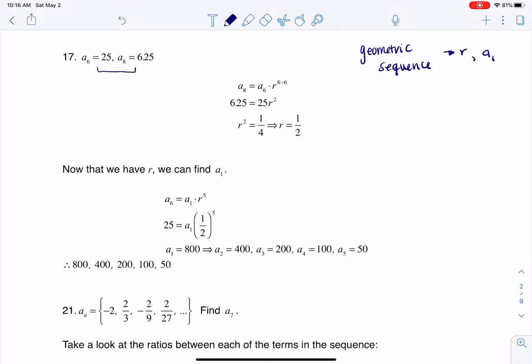If we look at what was given to us, I wasn't given an r, and I wasn't given an a sub 1, but I was given, if we highlight it here, I was given a sub 6 and a sub 8. I know if I start with a sub 6 and I multiply it by r, that would get me to a sub 7, and if I multiply it by r again, that would get me to a sub 8.